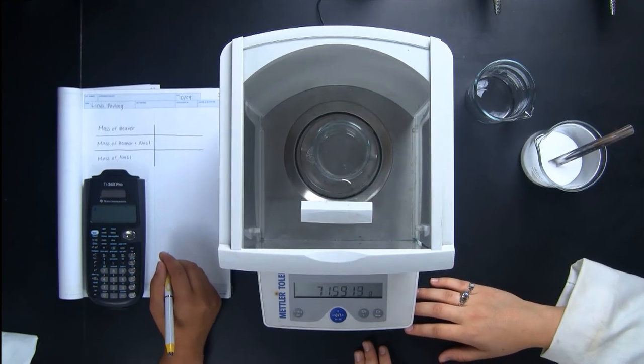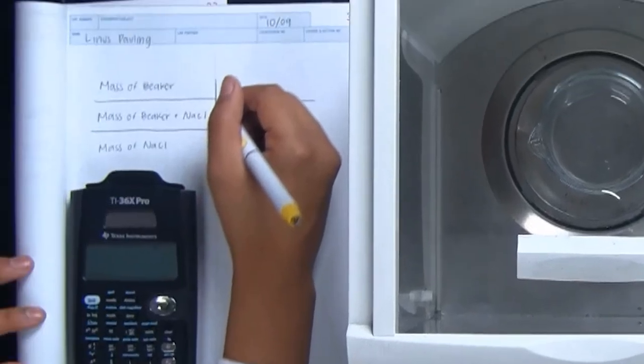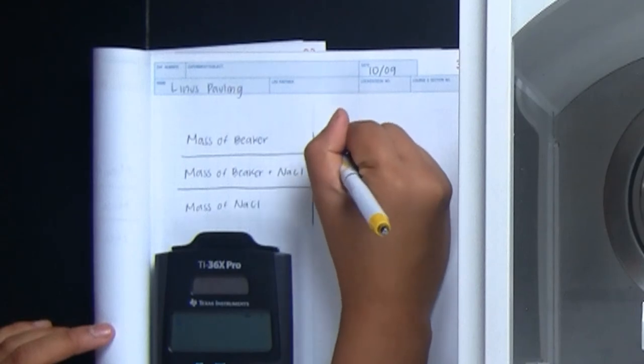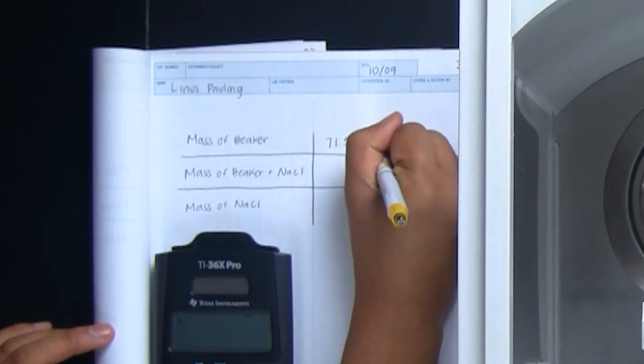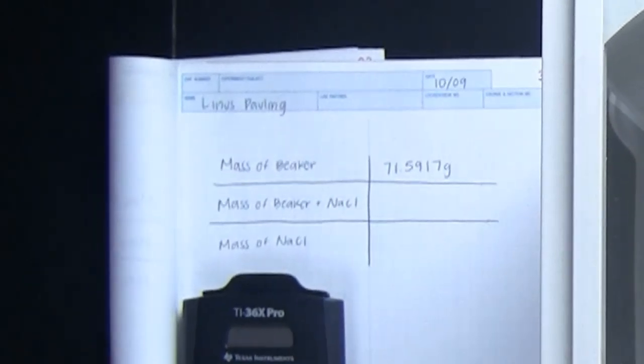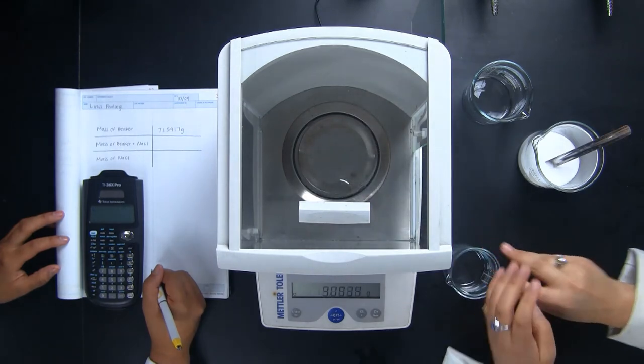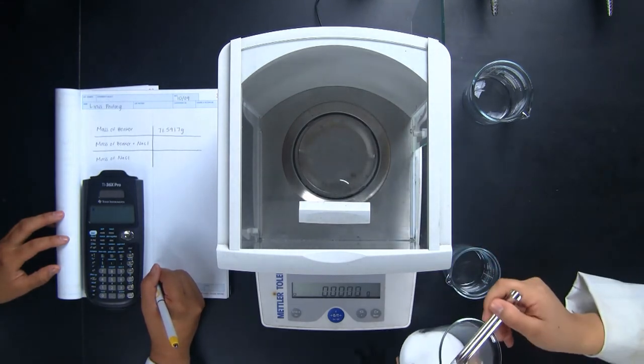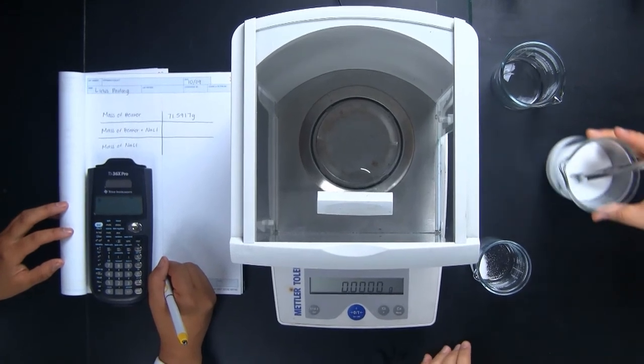Ileana places the beaker onto the balance pan to record its mass. Wendy has set up the data table to account for the mass of the empty beaker. Ileana carefully opens the balance box, places the beaker inside, and then closes it. This keeps any air movement through the lab from altering the measurement of the balance.